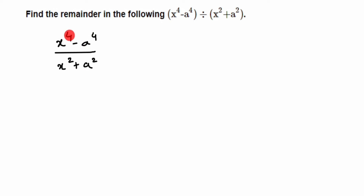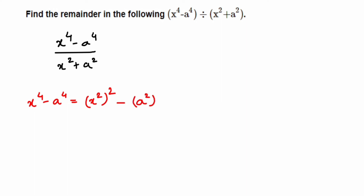I'm going to solve the numerator part. That is x to the power 4 minus a to the power 4. This can be written as x squared whole square minus a squared whole square. You might have learned this in exponents — power on power you just multiply, so 2 times 2 gives 4. Now if you observe this, it's like a squared minus b squared.